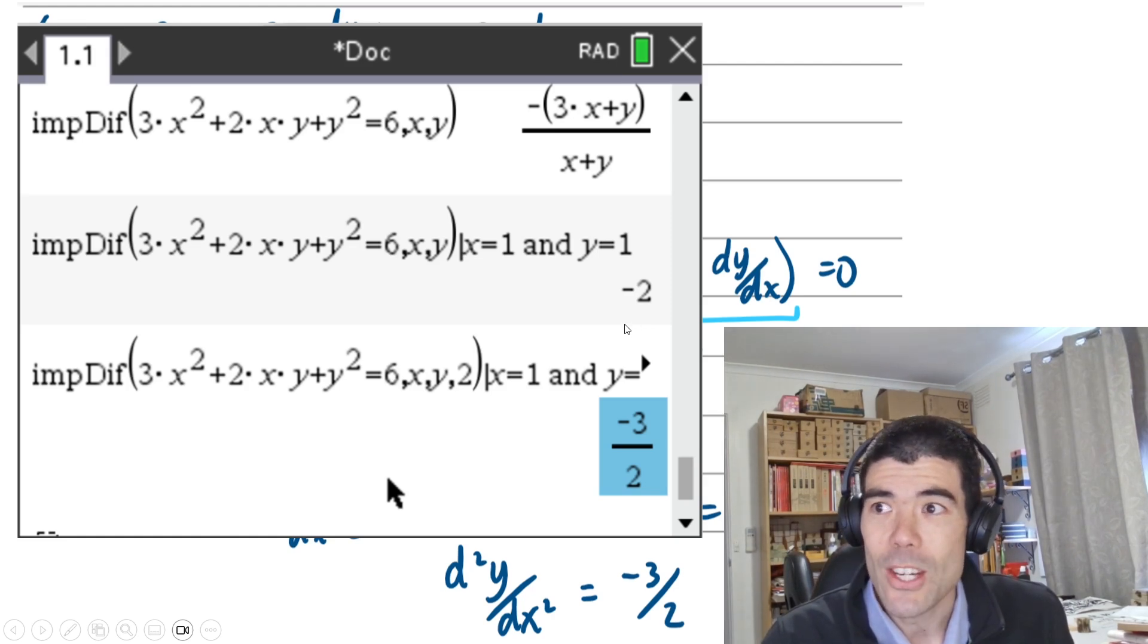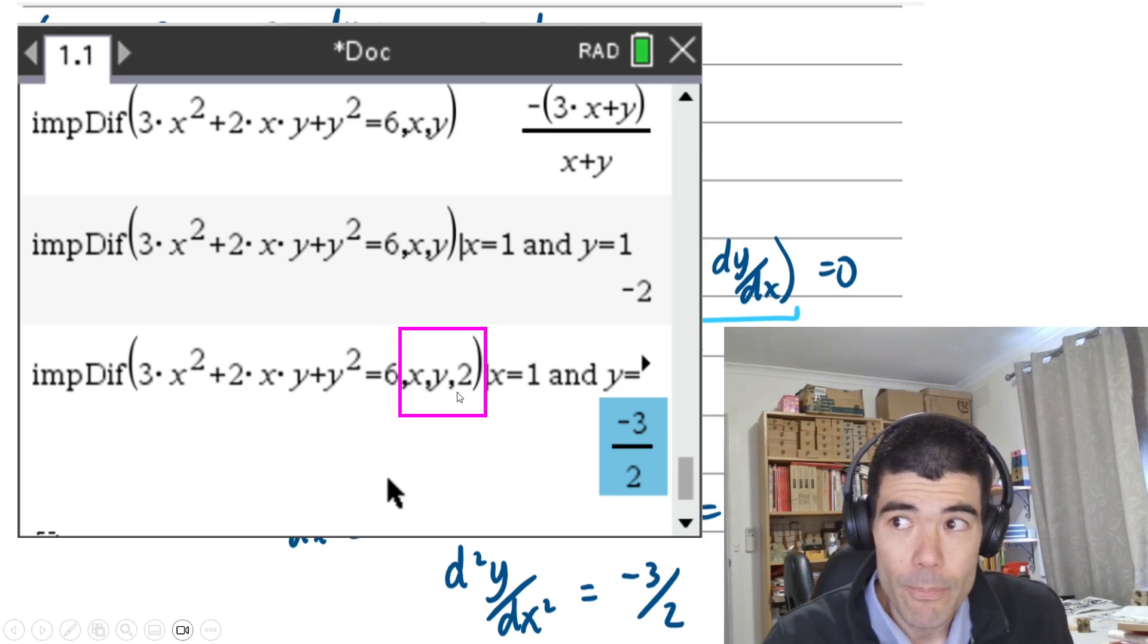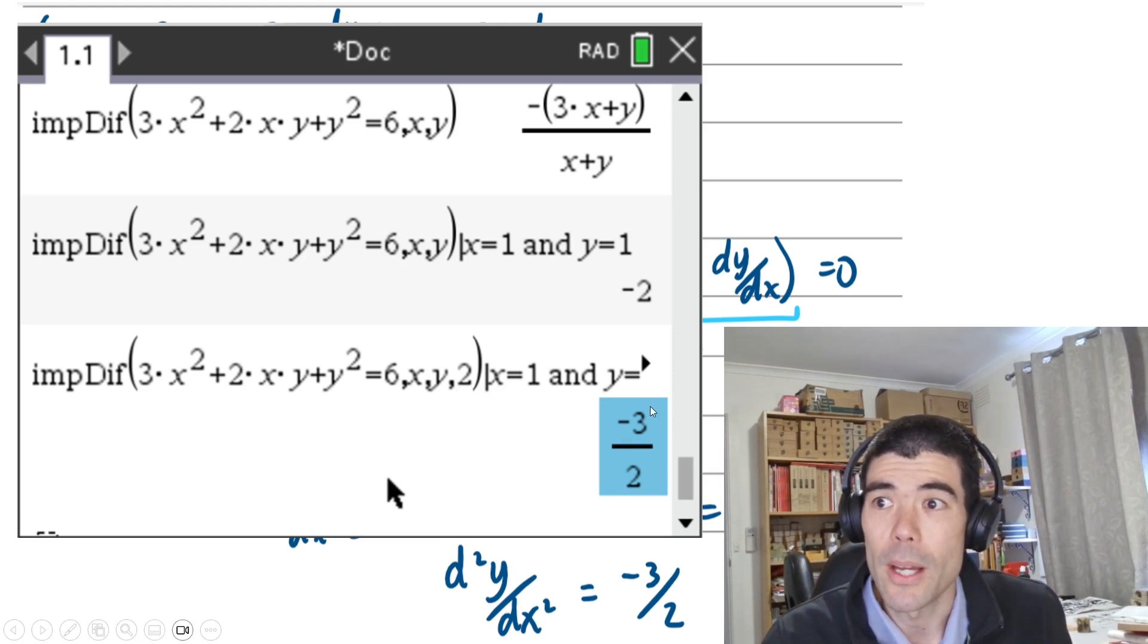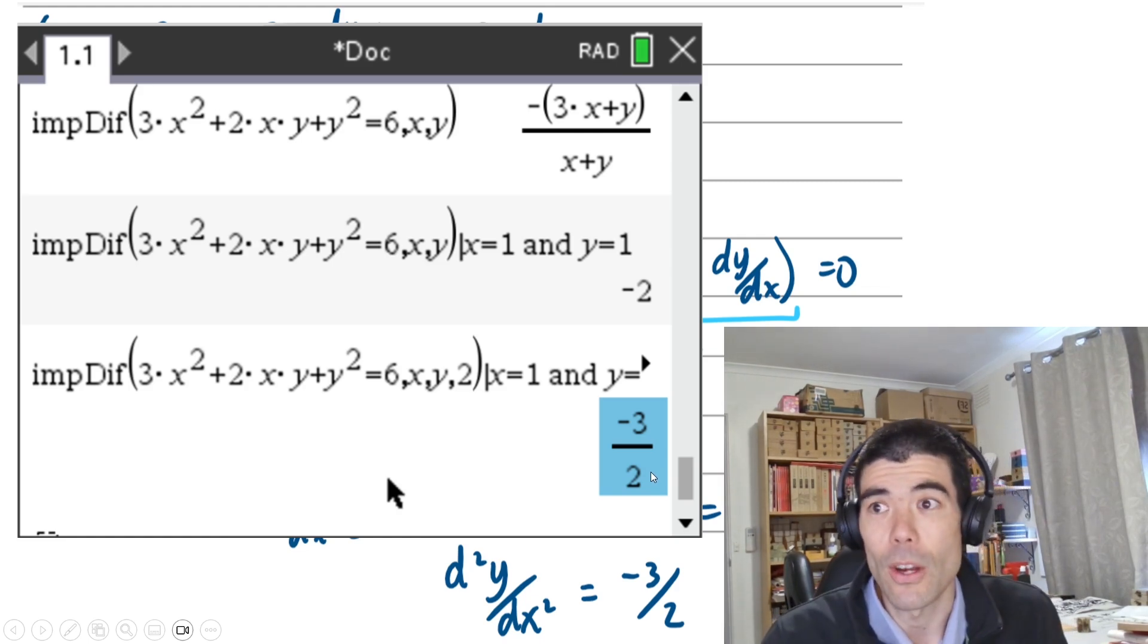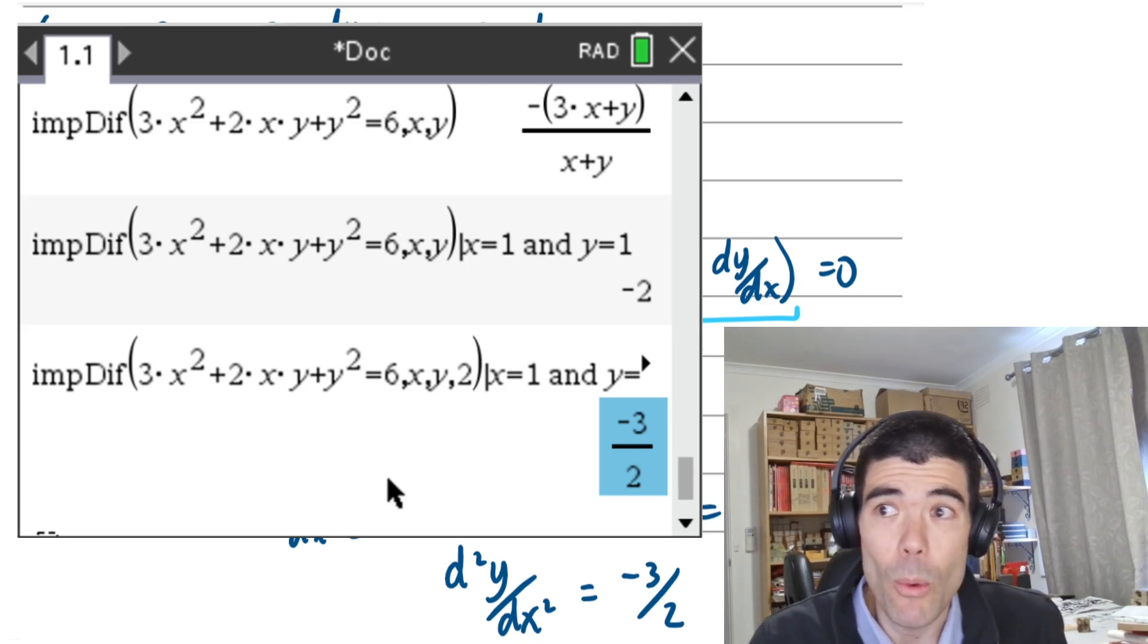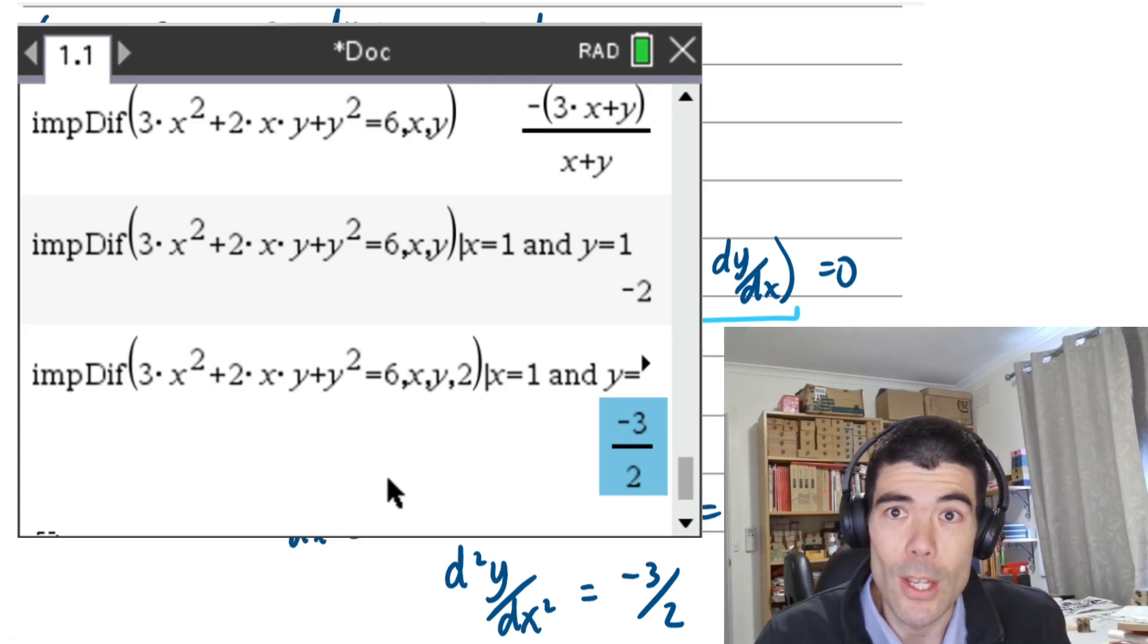We can actually do a second derivative on the CAS. The way that works is after the comma x, comma y, comma 2 tells it we want the second derivative. And we can sub in our conditions, x is 1, y is 1, and this would actually evaluate the second derivative at that point, which is as we found negative 3/2. That's quite handy for exam 2. Implicit diff, very likely to be on your exam 1.